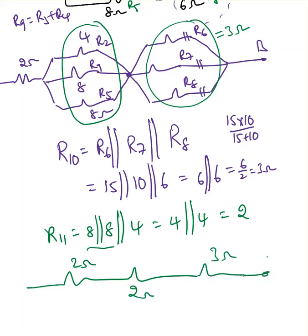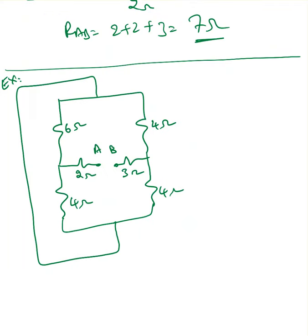What is the resistance between the A-B terminals? R_AB equals 2 plus 2 plus 3, which is 7 ohms. Here is the next example — he's asking us to find resistance between the A-B terminals. Same thing here: you need to start walking from A, reach B, and find out which elements are in series and which are in parallel.